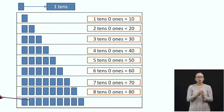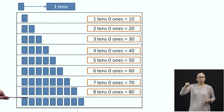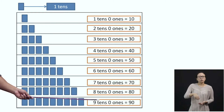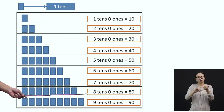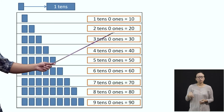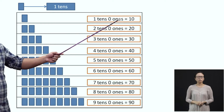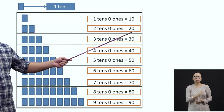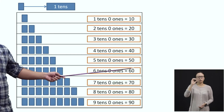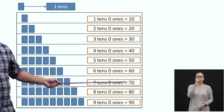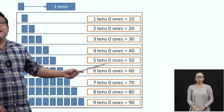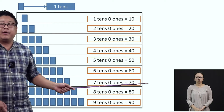Finally, we have nine blue strips. So, we will call it as nine-tenths and zero-ones. If you combine nine and zero, you will get ninety. So, let's look at these numbers: ten, twenty, thirty, forty, fifty, sixty, seventy, eighty, and ninety. These are the numbers that we are going to learn about in this lesson.